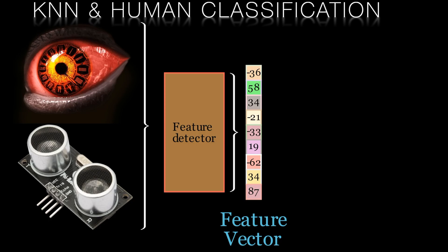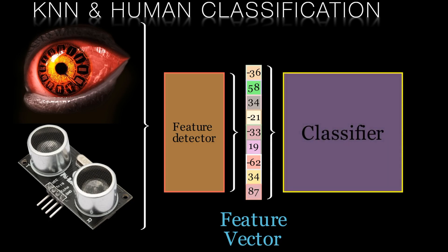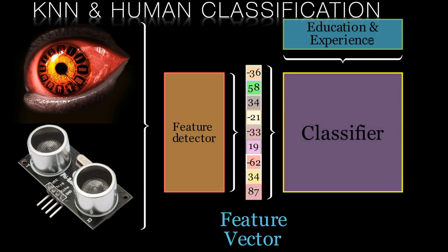We feed these feature vectors into some sort of comparator. This comparator is based on a library of examples that we've learned through our experiences or formal education. We are able to recognize similarity between our detected features and patterns that we've already seen.